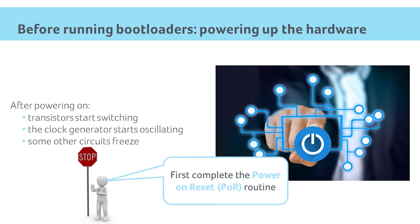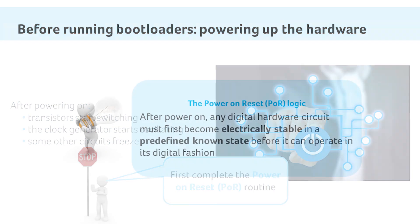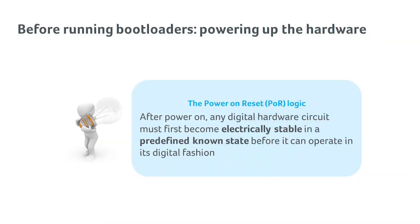The hardware must first complete the power-on reset, or POR for short, routine. After power-on, any digital hardware circuit must first become electrically stable in a predefined known state before it can operate in its digital fashion. Controlling this sequence is the task of the power-on reset logic.